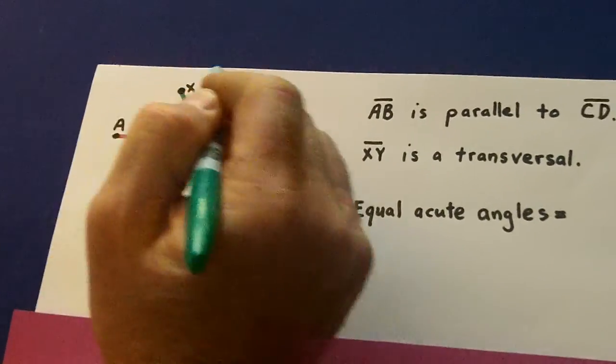Now watch this. Angle 1 is 60 degrees. So that's what the test says, and then it says find all these others. Now watch this. Supplementary, 1 and 2 equal 180. So 2 must be 120 degrees because 120 and 60 is 180.